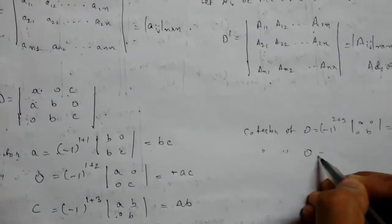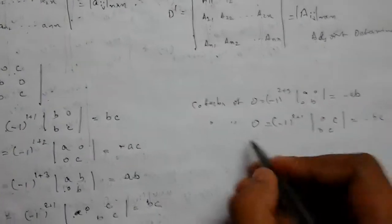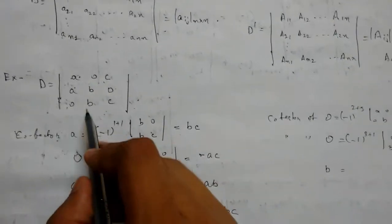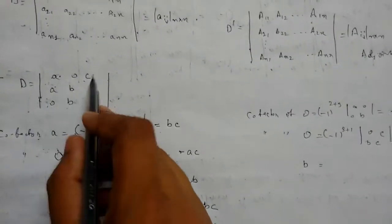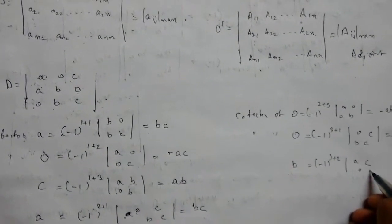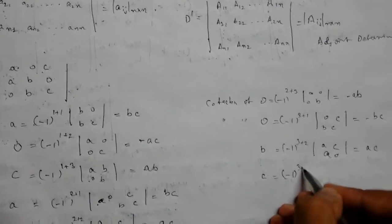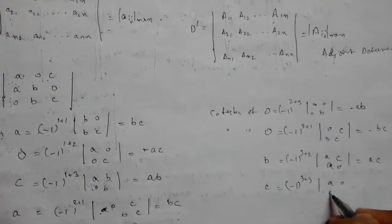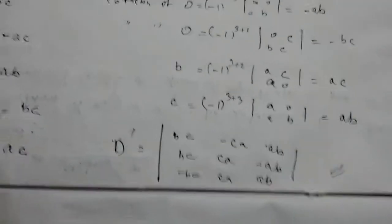Now cofactors of the third row. Cofactor of 0: (-1)^(3+1) times |0, c; b, c| = -bc. Cofactor of b: (-1)^(3+2) times |a, c; a, 0| = ac. Cofactor of c: (-1)^(3+3) times |a, 0; a, b| = ab. Having all cofactor values, we now put them into our adjoint determinant D dash — and this is our answer.